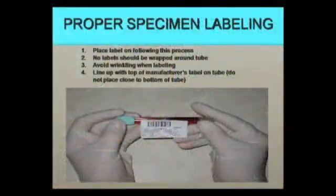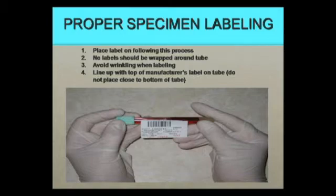Once blood samples are collected, it is very important to label the tubes before leaving the patient's bedside. Never carry unlabeled tubes out of the patient's room for any reason. Place the label on as seen in this picture. Remember to write your clock code and the collection date and time on the label. Use a regular ballpoint pen so the ink will not smear.